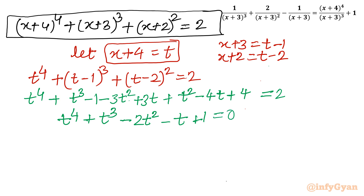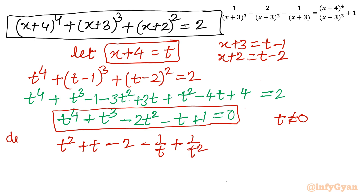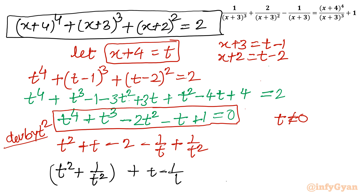Since t=0 is not a solution, we can divide the entire equation by t². This gives t² plus t minus 2 minus 1/t plus 1/t² equal to 0. Rearranging, we collect (t² + 1/t²) and (t − 1/t) as grouped terms equal to 2.